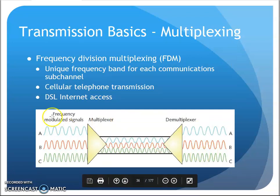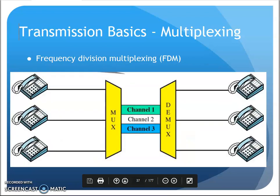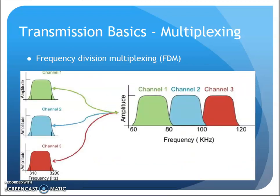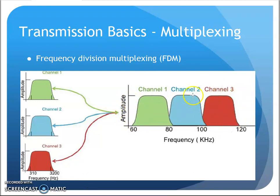Frequency division multiplexing was used in DSL and some early cellular and telephone transmissions. Here we use different frequency bands for our signals. With DSL, the low frequency band was for voice and the higher frequency band was for data — your computer signal. Those two signals got multiplexed together onto the phone line going back to the DSL provider. That's actually how DSL functioned.